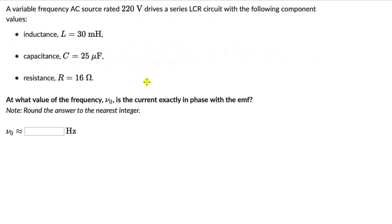Let's solve a question on resonance frequency and one on the effects of changing LC or R on the current flowing in the circuit. For the first one, we have a variable frequency AC source rated at 220 volts which drives a series LCR circuit with given component values of inductance, capacitance, and resistance. The question is to figure out the value of the frequency when the current is exactly in phase with the EMF.